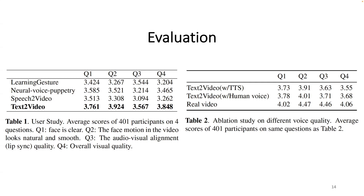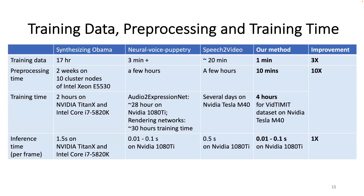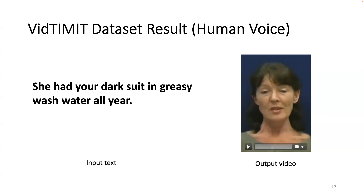We also conduct an ablation study on different voice quality, as shown in Table 2. The overall visual quality from our text-based video generation method is barely correlated with the voice quality. We compare our method with SOTA — Neural Voice Puppetry and Speech-to-Video — on training data size, data processing and training time, and inference time. Our method needs the least amount of data to train a model. Using a 44-word or 20-sentence list to capture all phonemes in English, the training video input can be less than one minute. Pre-processing involves running OpenPose and building up a phoneme pose dictionary. The inference time of our method is around 0.1 seconds per frame, which is similar to Neural Voice Puppetry but much faster than Synthesis of Obama and Speech-to-Video.